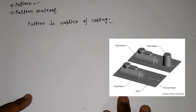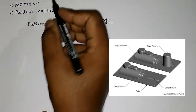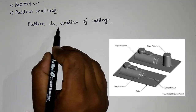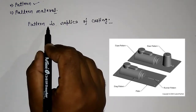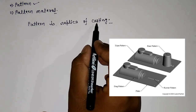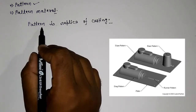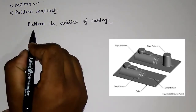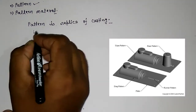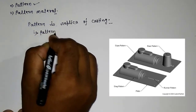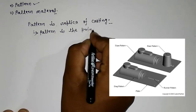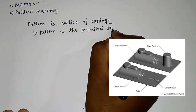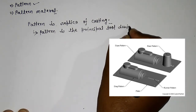Hello friends, here in this video we will discuss what is pattern and the pattern material. Here I have written the definition of pattern. Pattern is a replica of casting — it means whatever the shape of casting we obtain, that is the exact shape of the pattern. So here we can say that pattern is the principal tool during the casting process.